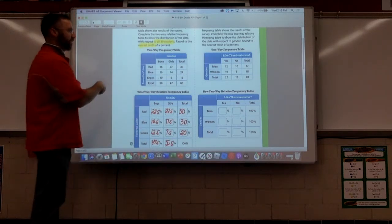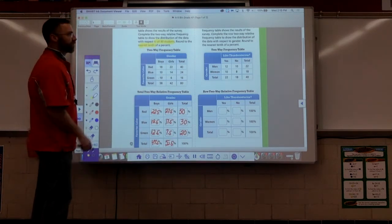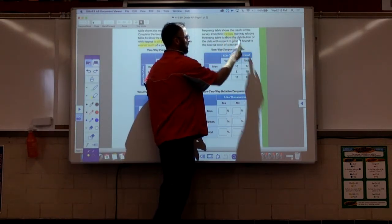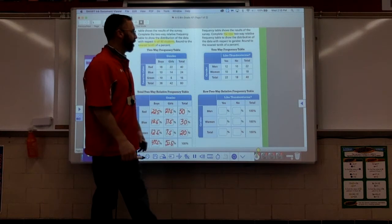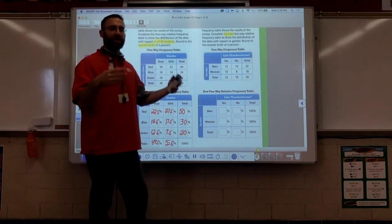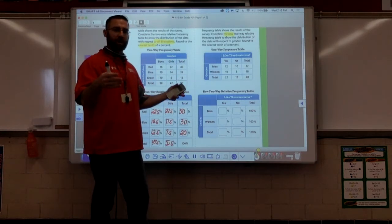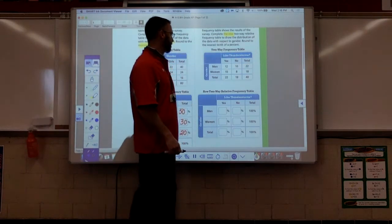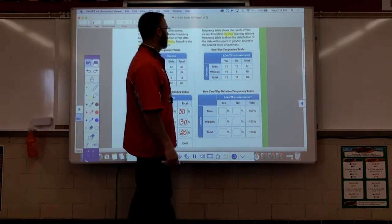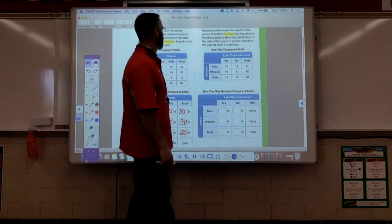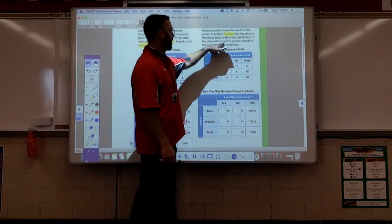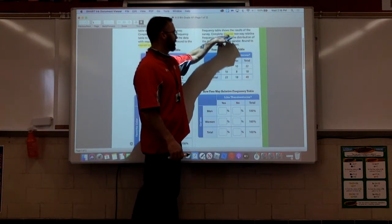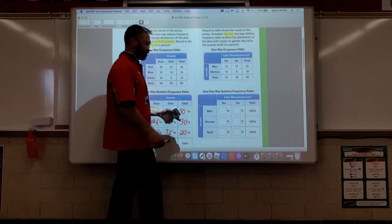Moving over to the next one. We've got a two-way relative frequency table. It says complete the row. What do we see? I see the word the row. So we are comparing things to the total of the row. Round it off to the nearest tenth of a percent.